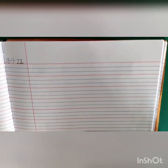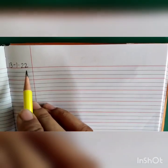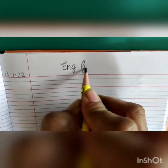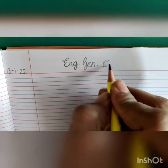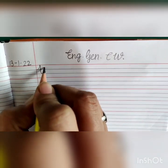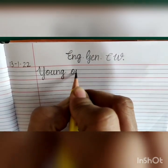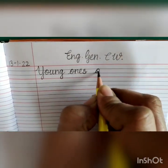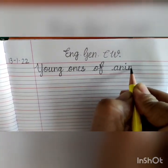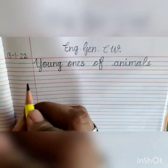Today's classwork is Young Ones of Animals. Open a full-end classwork notebook and write down today's date 13-1-22. At the top write down English General Classwork. Now write down the heading: Young Ones of Animals.